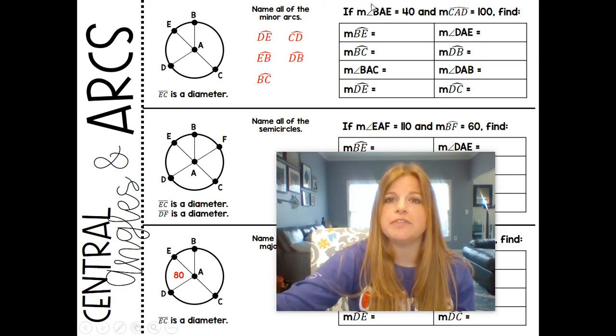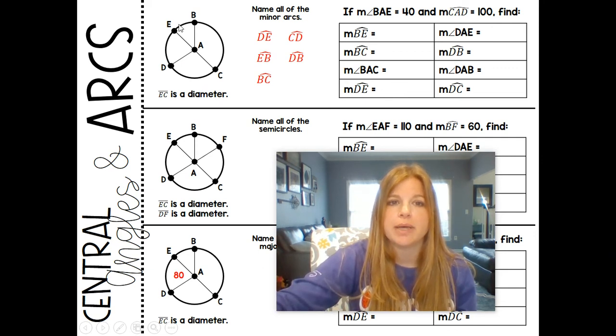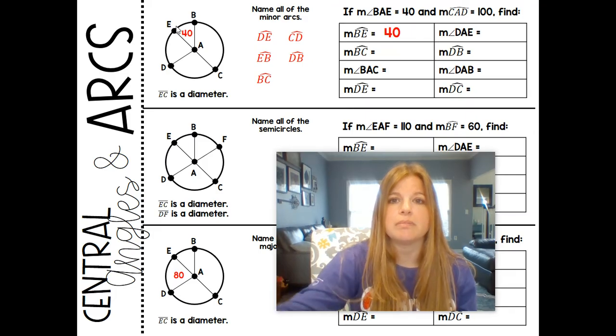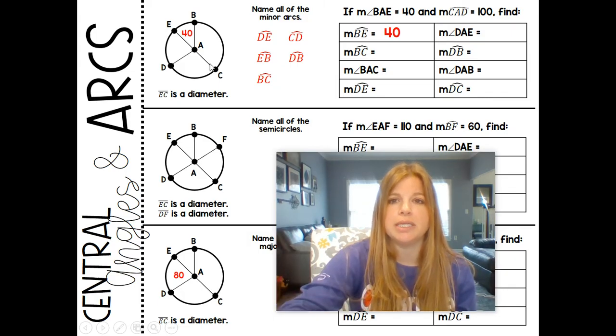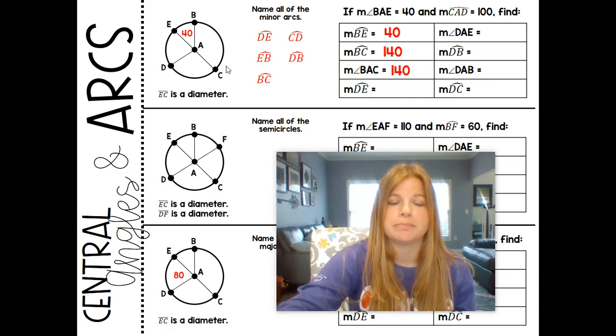So now we've got some questions. It says if the measure of angle BAE, so this angle here is 40, and CAD, the arc, is 100, find all of these other missing parts. So if I wanted to find the measure of arc BE, I know that my central angle is 40 degrees. So the arc of BE would also be 40. If I know that this arc BE is 40, and I want to find arc BC, well, this arc and this arc should make 180 degrees because that's a diameter. So 180 minus 40 is 140. Now, if the measure of arc BC is 140, then its central angle, BAC, is also 140.